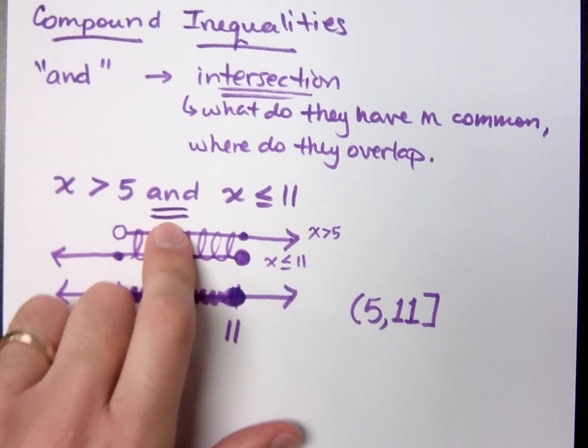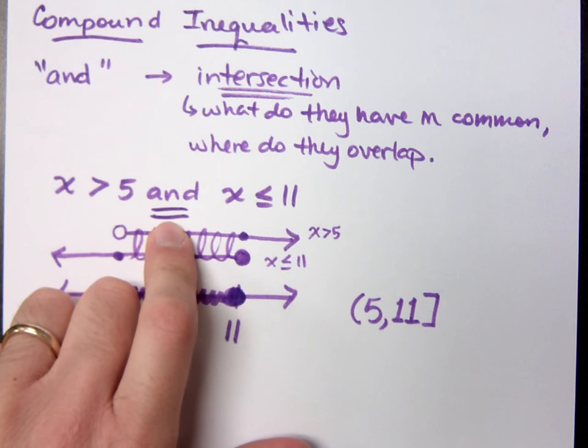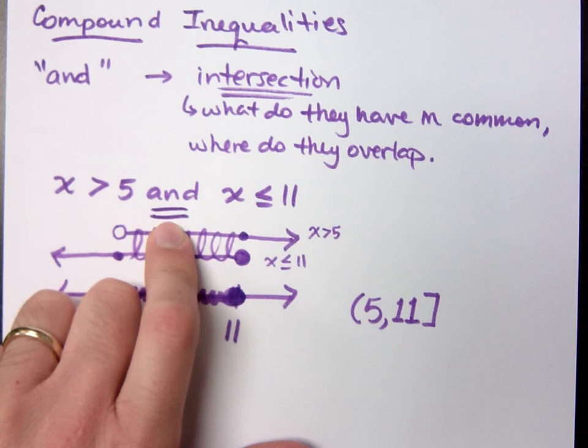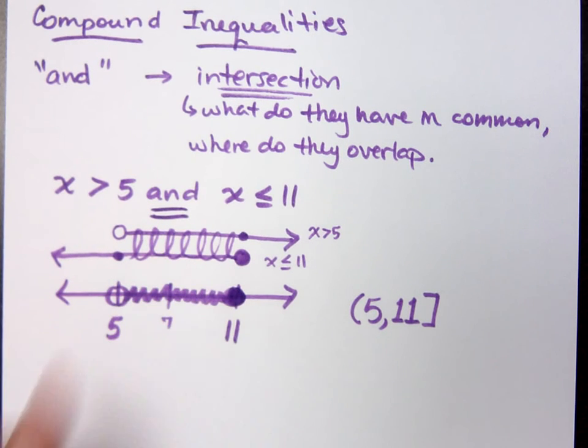So this 'and' symbol, we see that a lot of times, even if you're looking at prerequisites for a class. Prerequisites may say that you have to have taken one class and you have to have taken another class. So in order to take this class, you have to have taken these two other ones before.